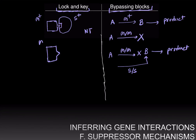Now if there is a mutation in M and it changes the shape of the protein, then the protein encoded by the wild-type allele of the S gene, S+, will no longer be able to fit like lock and key, and you will get the mutant phenotype.